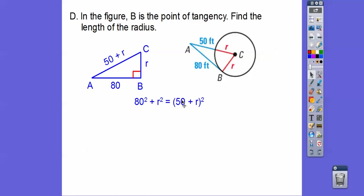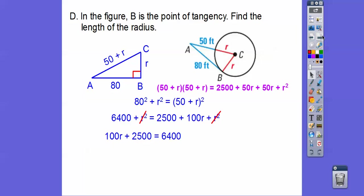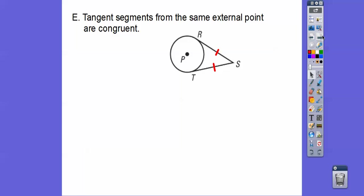Be careful, you guys. You've got to write this twice: 50 plus R, 50 plus R, and then foil that out. When you foil it out, when we combine outer times outer with inner times inner, we're going to get 100R right there. Now we subtract R squared, subtract 2,500, divide by 100, and we get 39 feet right there. That's a big circle.